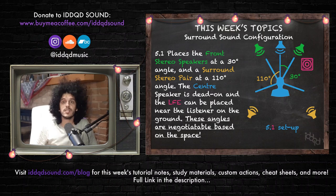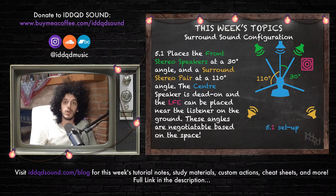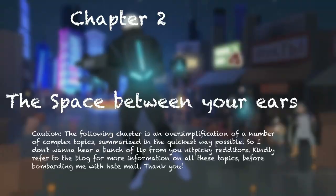5.1 consists of the usual left and right stereo speakers, plus a center speaker right between them, a pair of stereo speakers behind you which we call the surrounds, and an LFE. LFE is the channel that takes care of outputting the brunt of low-end energy in a 5.1 mix. We'll get to why this is in a second.